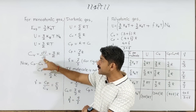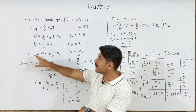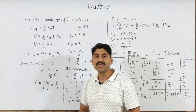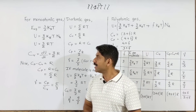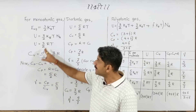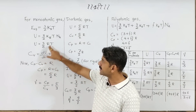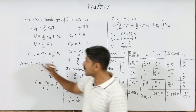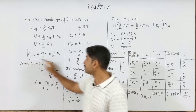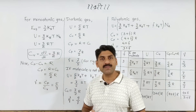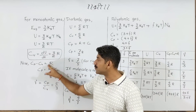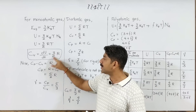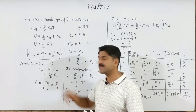The derivative of total internal energy U with respect to T gives Cv, the molar heat capacity at constant volume. Cp is the constant pressure derivative with respect to T. For monoatomic gas, Cv equals 3/2 R, and you add R to get Cp, so Cp equals 3/2 R plus R.